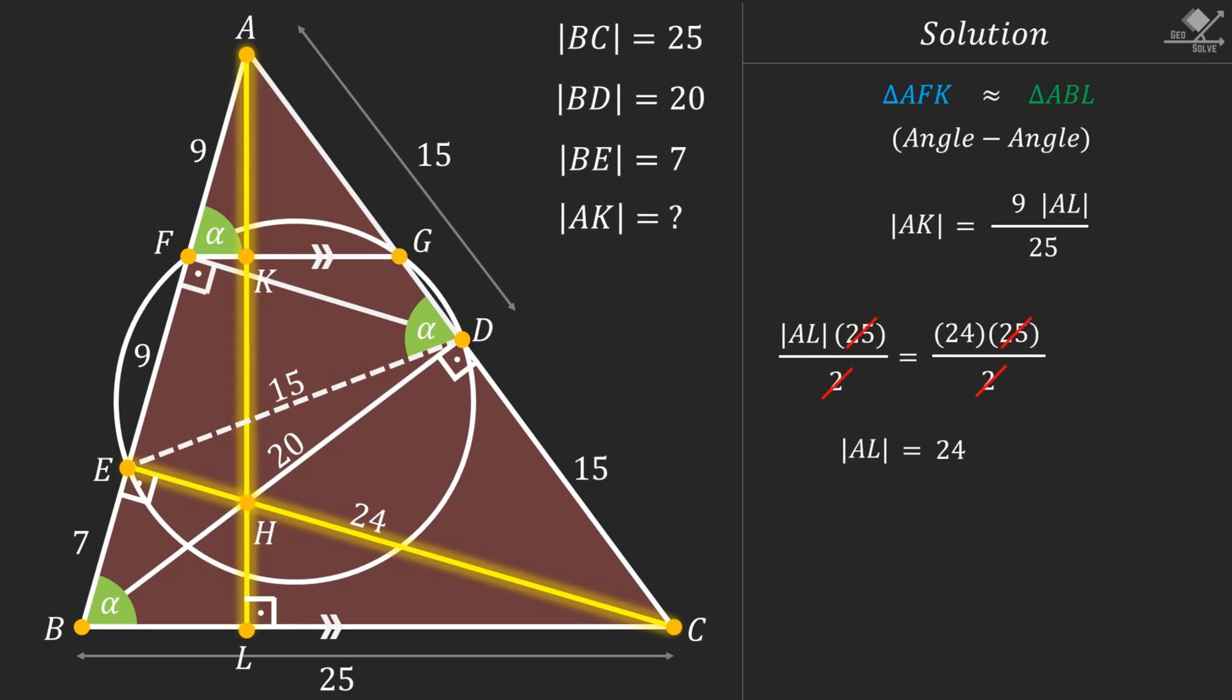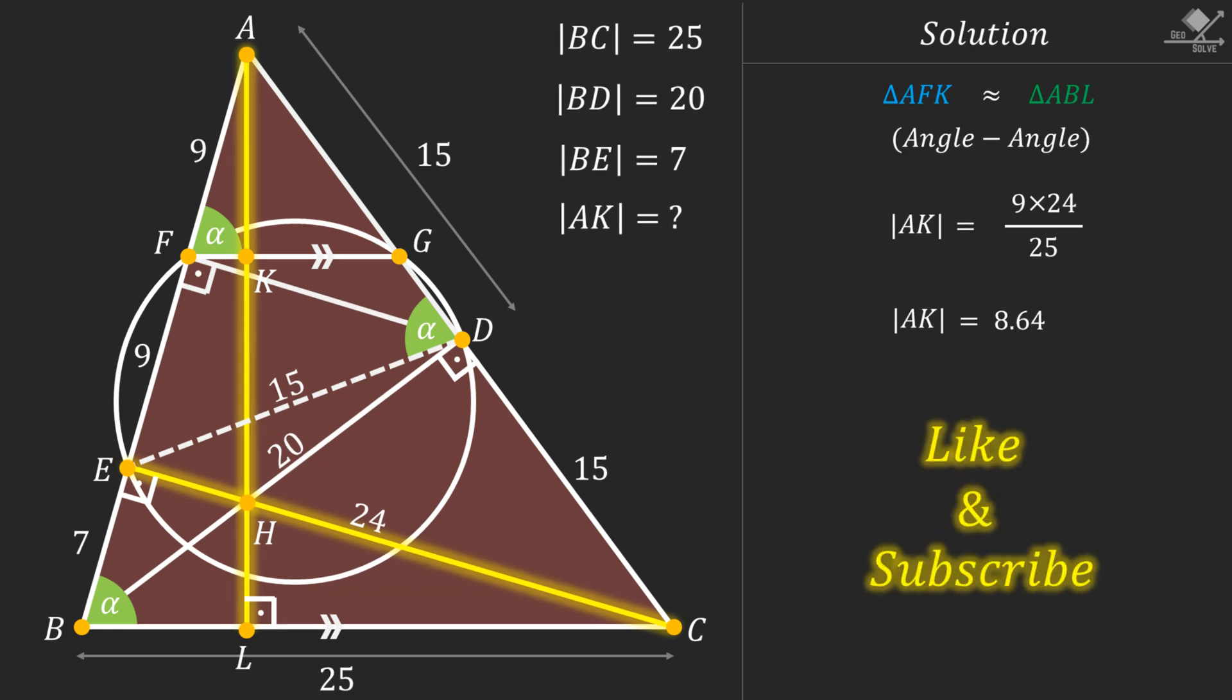Now let's insert AL into our equation and find AK as 9 times 24 over 25 which is 8.64 units. And that is our answer. Please like and subscribe if you enjoyed this. I'll see you on the next one.